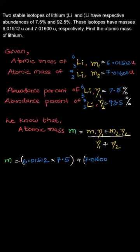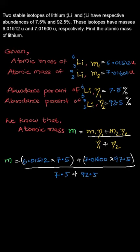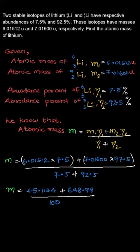We substitute the values in this equation: 6.01512 times 7.5 plus 7.01600 times 92.5, divided by 7.5 plus 92.5. By simplifying it, we get the atomic mass of lithium is 6.941 units.